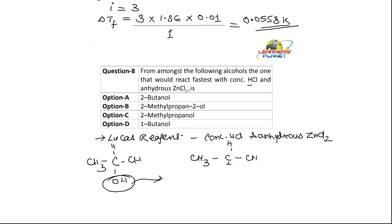First of all, your H plus attacks and it takes out OH minus and then it forms the carbocation. So students, the intermediate form here is a carbocation. The more stable is the carbocation, the faster will be the reaction.